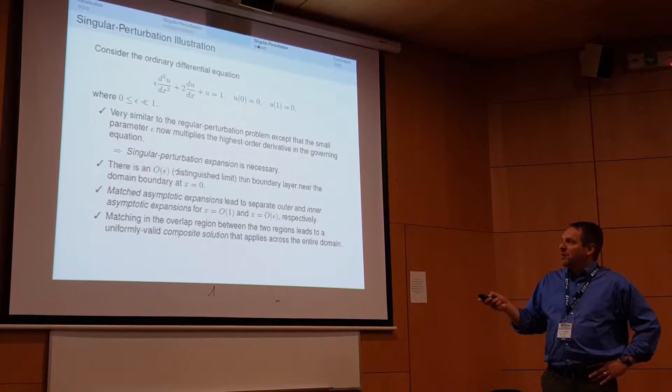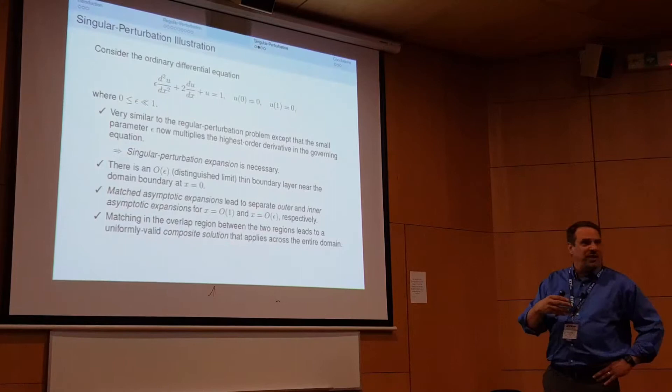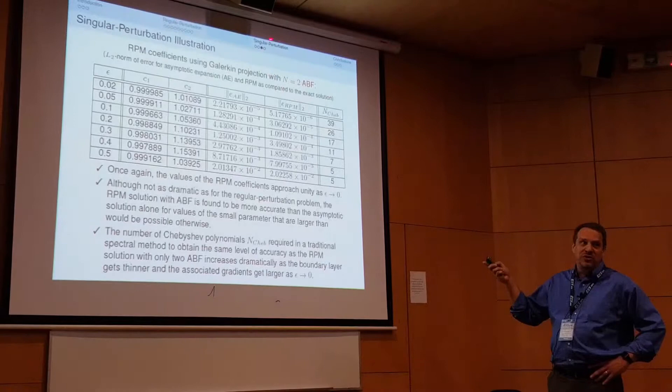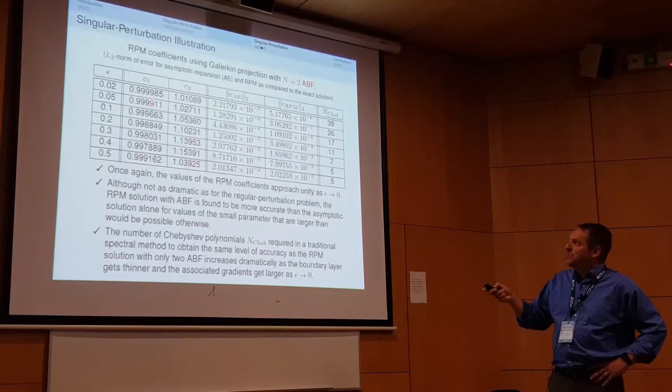We use matched asymptotic expansions to get the outer solution when x is order one, the inner solution when x is order epsilon, and then match them together into a uniformly valid composite solution. For this example, I'm using only the first two asymptotic basis functions, giving coefficients C1 and C2.